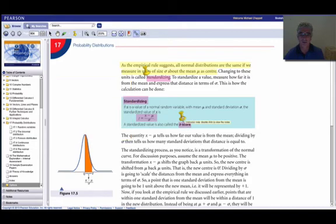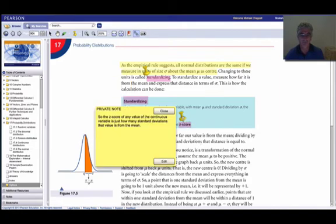We call it Z score. So the Z score of any value of our continuous variable is how many standard deviations that value is from the mean. That's what we mean by the Z score. And it's really important you understand that. And don't just rush off into formulae. Understand what you are doing. And this will make a lot more sense.